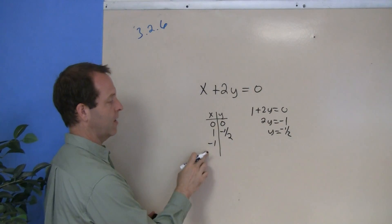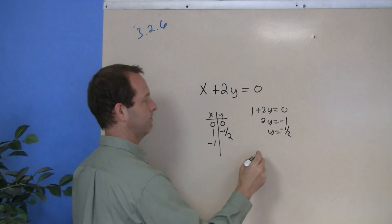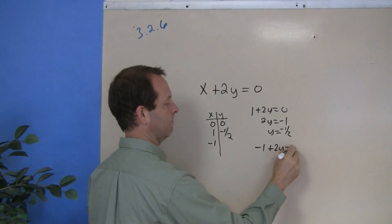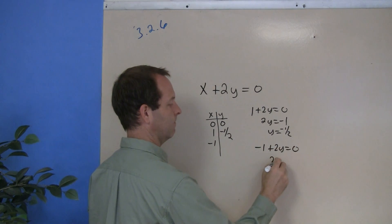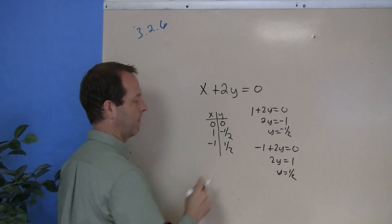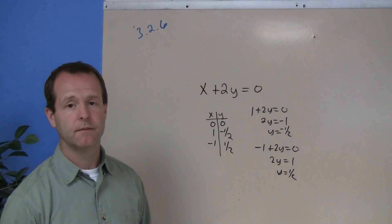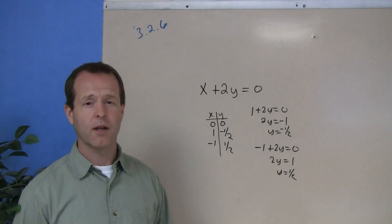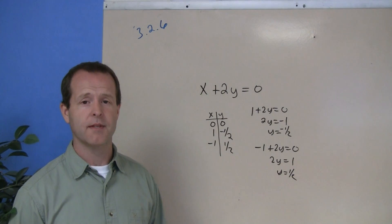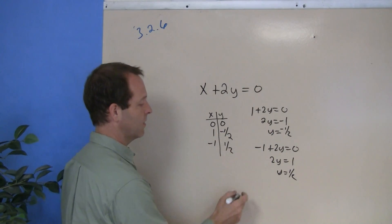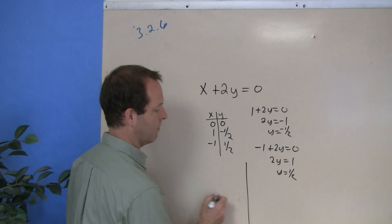And then if x were negative 1, I get y equals one half. In a case like this, there's no harm to go ahead and draw up a table, find a couple of values, and then go ahead and plot them.